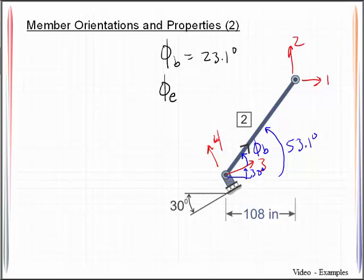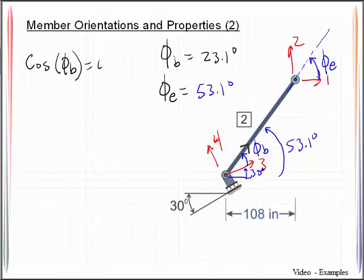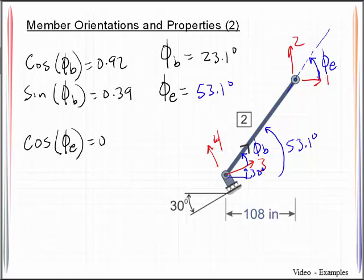Now to get the ending angle that I should be using, what I'm going to do is I'm going to project that member out, and I am interested in going from the degree of freedom up to the projection of that member, so I'll label that phi sub e, and that will be 53.1 degrees. So we've got cosine of that beginning is 0.92, sine of that beginning angle is 0.39, cosine of the ending angle is 0.6, and sine of that ending angle is 0.8.